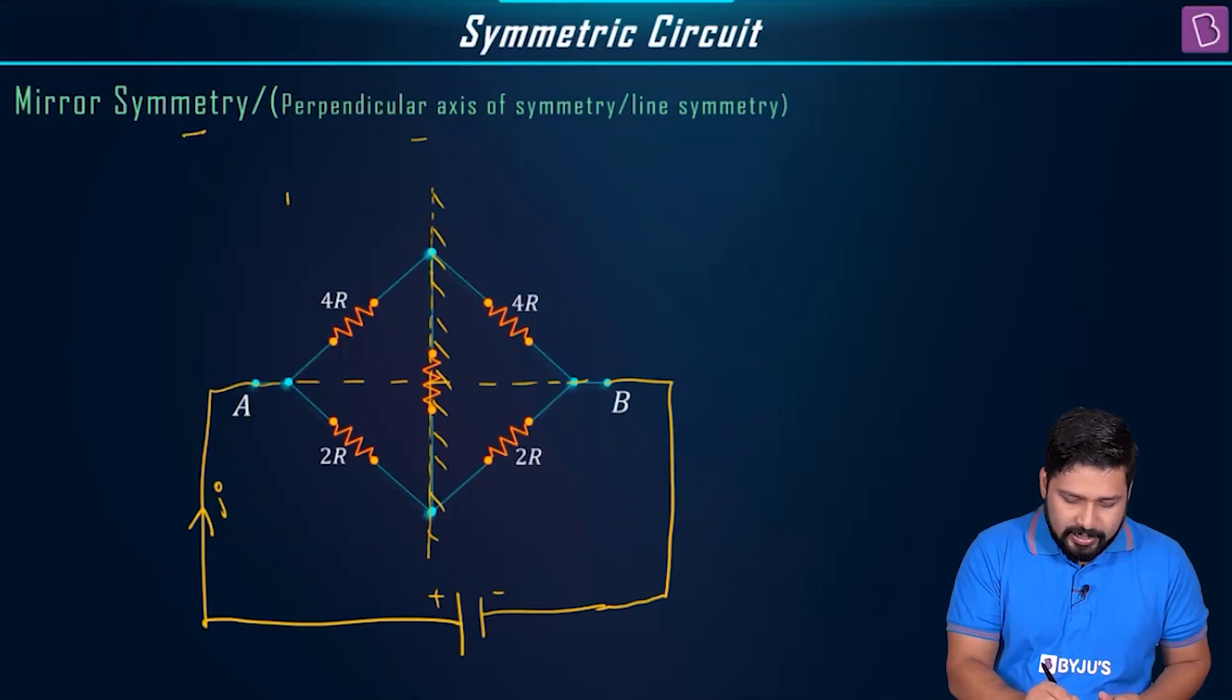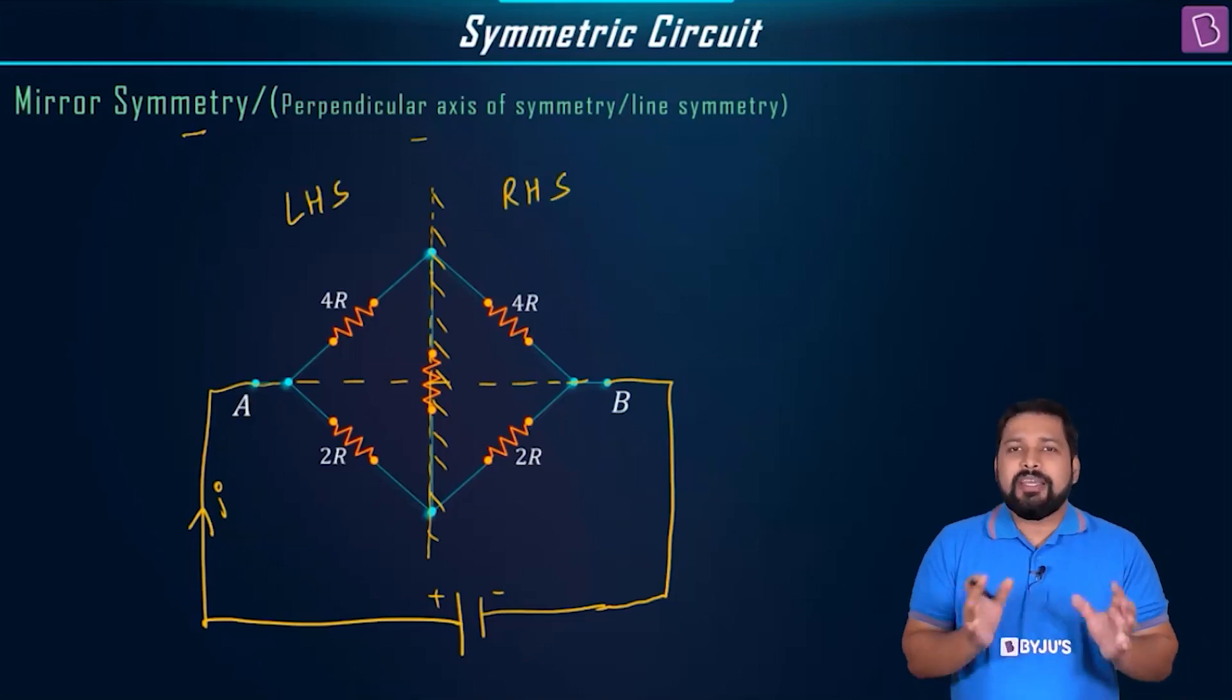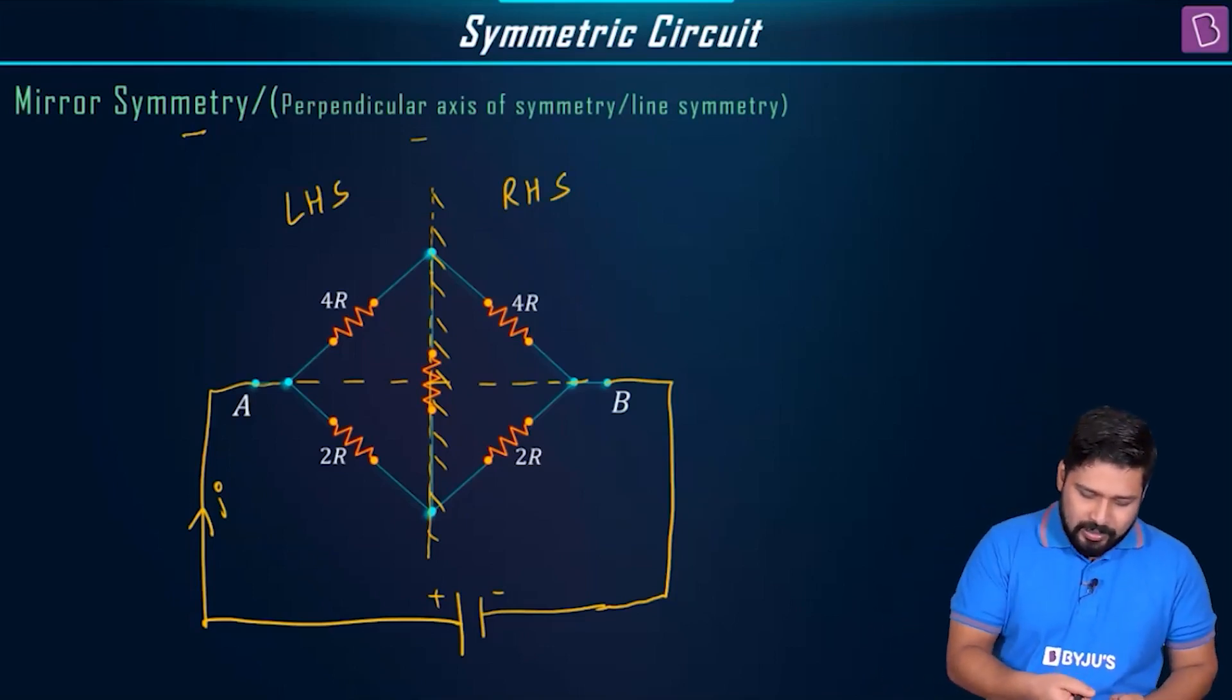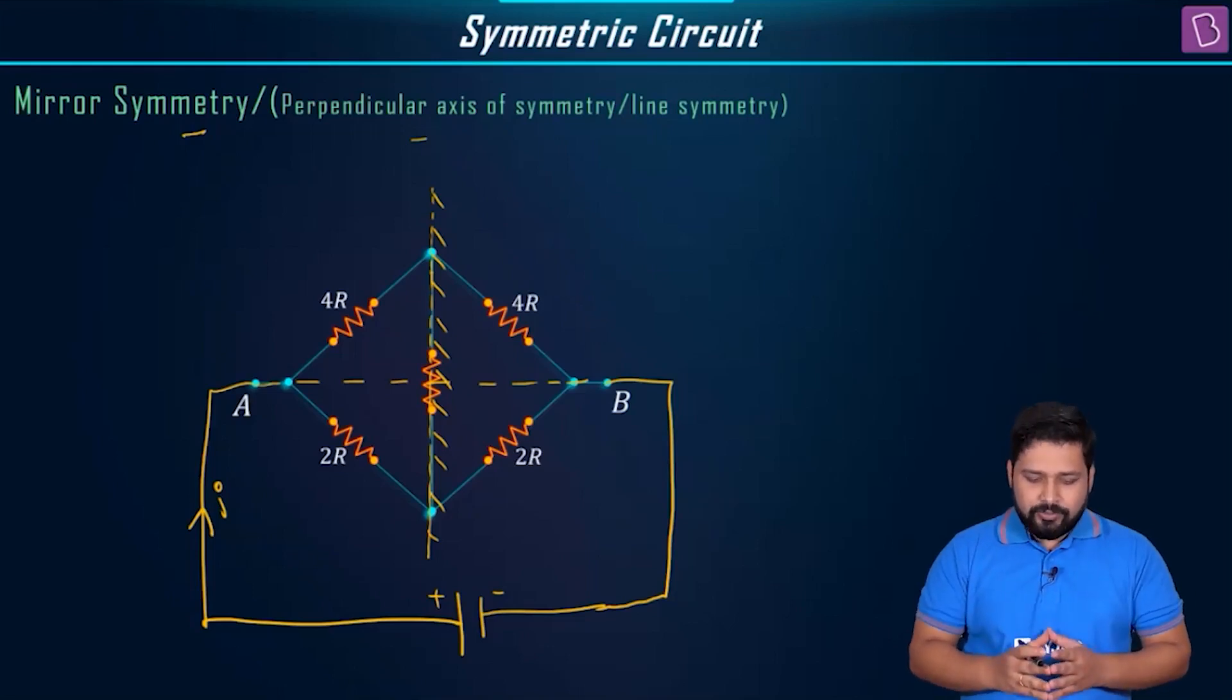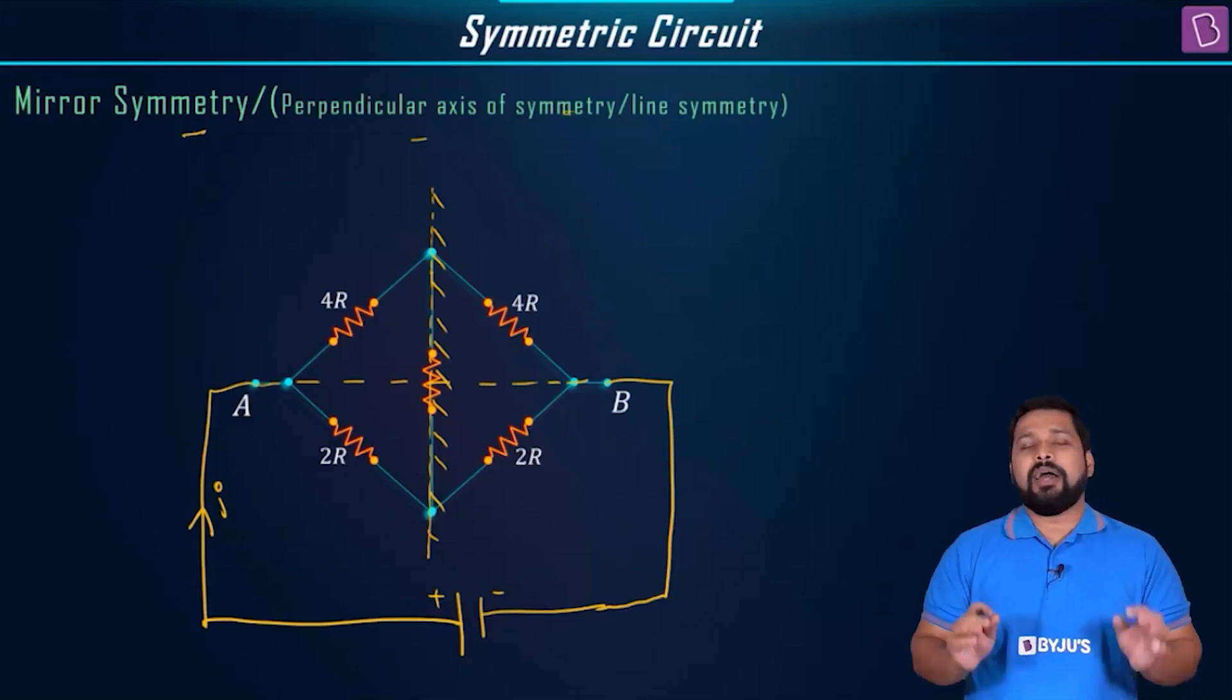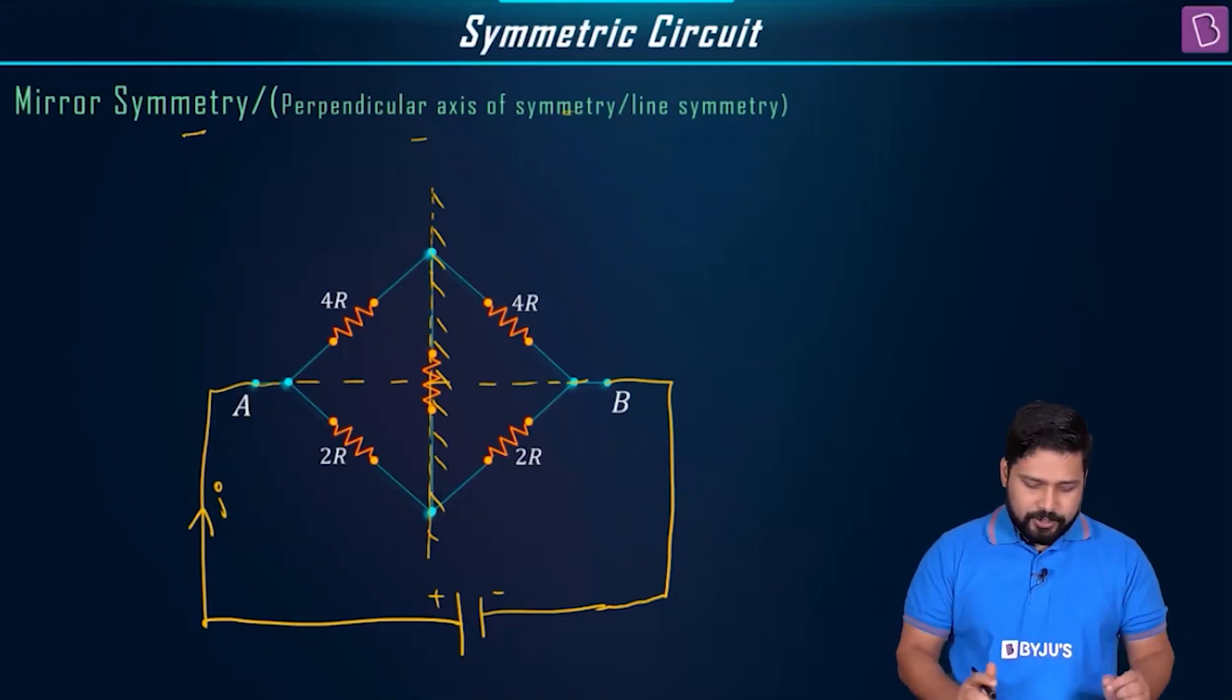If I consider this to be a mirror, you can see exact image on left hand side of the circuit is equal to right hand side of the circuit. So if I call this as LHS, this should be equal to exact RHS, exact replica. Once you have divided it like this and you have seen that this is the line of symmetry or this is the perpendicular axis of symmetry.